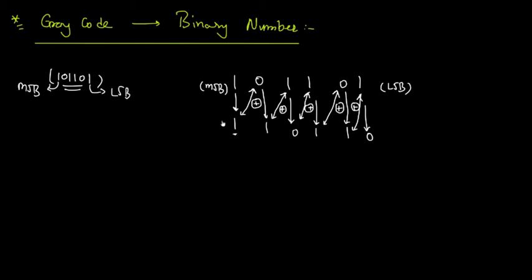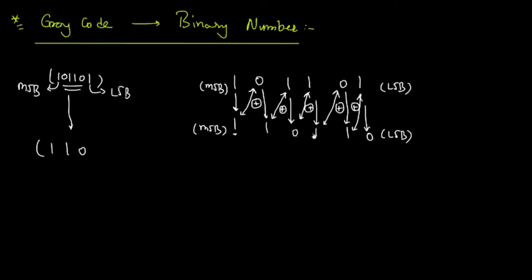This is the most significant bit in the binary number and this is the least significant bit. The final answer in binary number is 100110. This way we had converted the given grey code into a binary number.